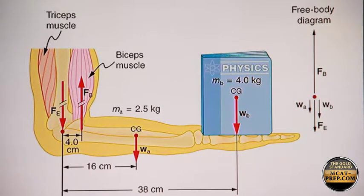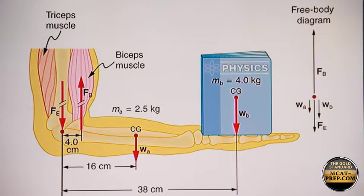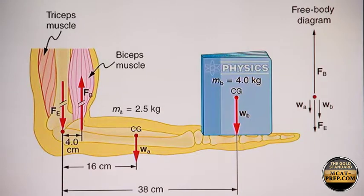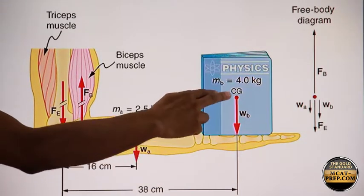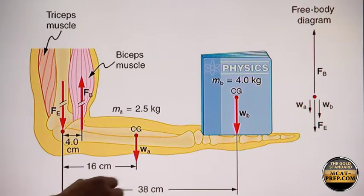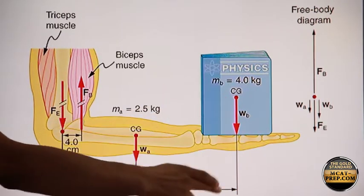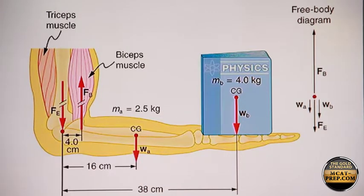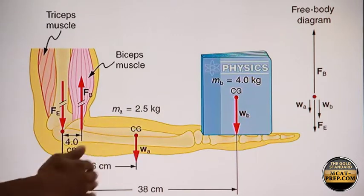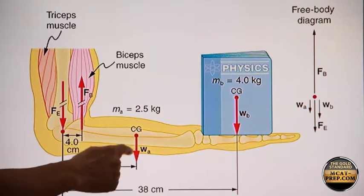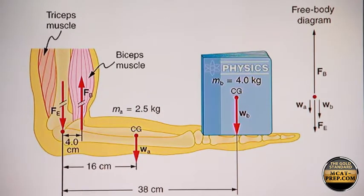So I just want to orient you around this forearm. You're holding that physics textbook just like a Parisian waiter. The textbook has a center of gravity, and that's where its weight acts downwards. So we have the weight of the book acting downwards here. We have the hand and forearm, and the center of gravity of that. We have the weight of the arm acting downwards at the center of gravity of the forearm and arm.